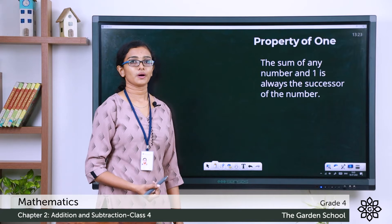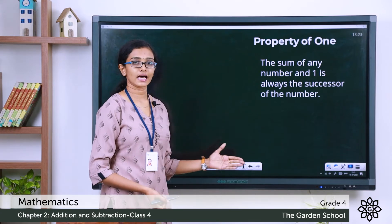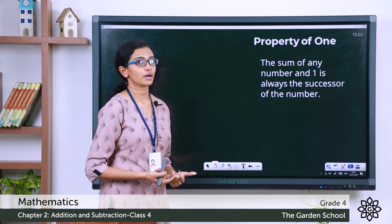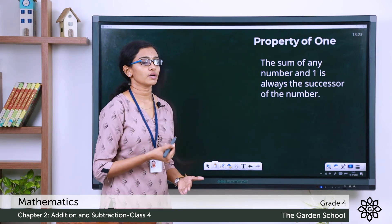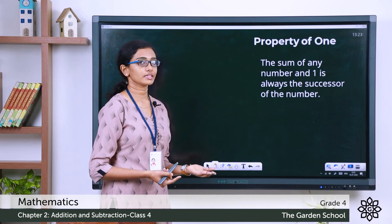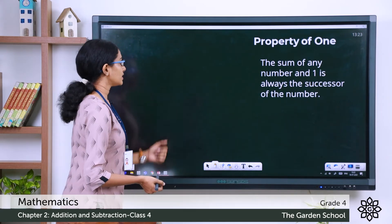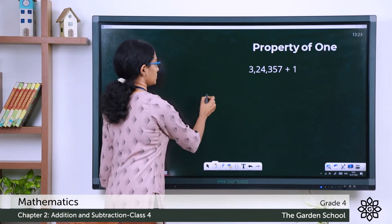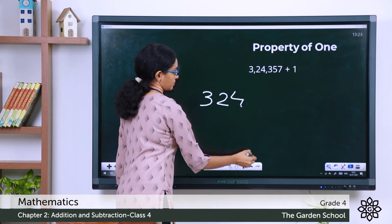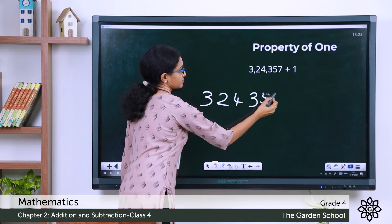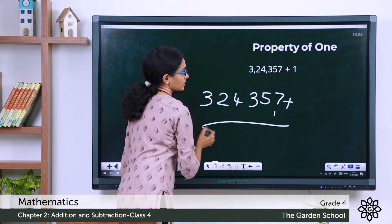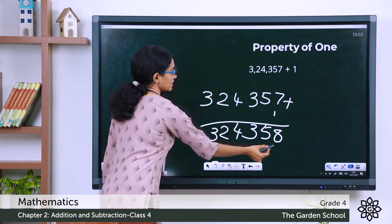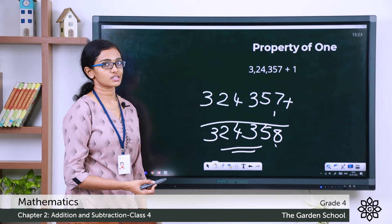Now the property of 1. The property of 1 says that the sum of any number and 1 is always the successor of the given number. We learned about successor in Chapter 1 — the successor is the number that comes right after a given number. Let's check that with an example. Look at this number plus 1: 7 plus 1 is 8, all other digits remain the same, and this number is the successor of the original number.